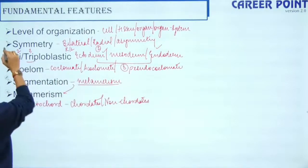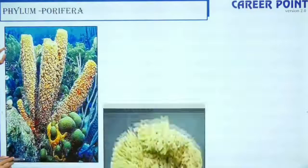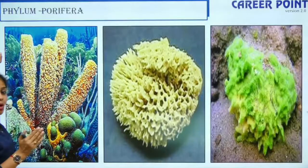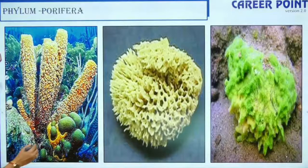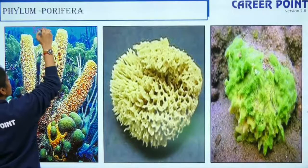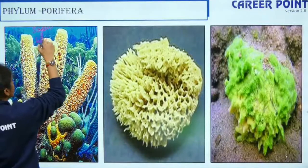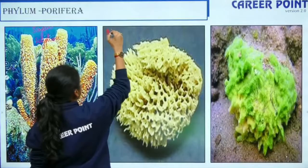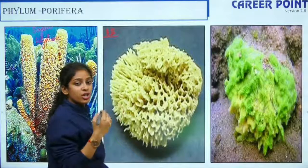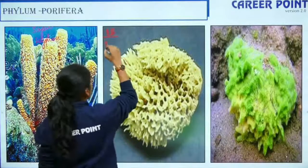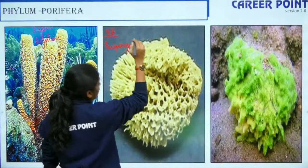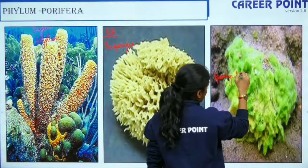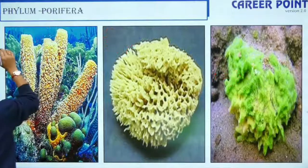For every particular phylum we are going to discuss these features. The first one is Phylum Porifera. There are three important examples: the finger sponge Sycon, the bath sponge Euspongia — which is used as a scrubber — and the freshwater sponge Spongilla.